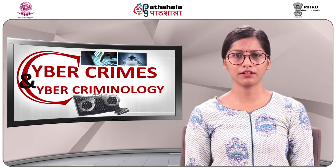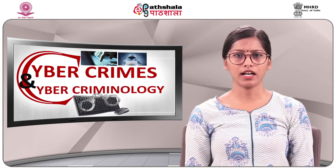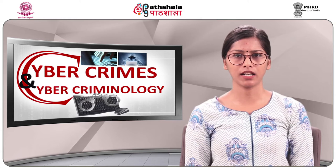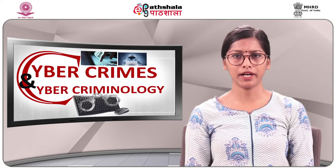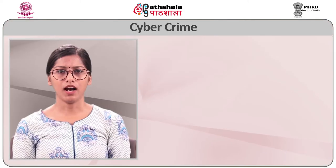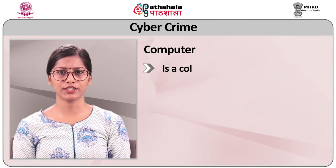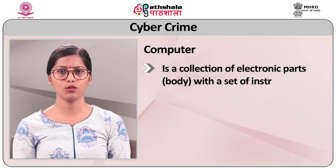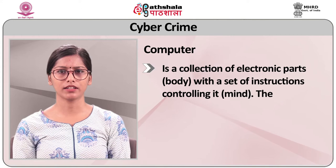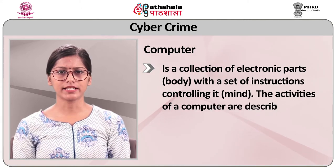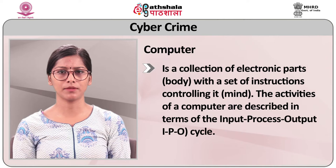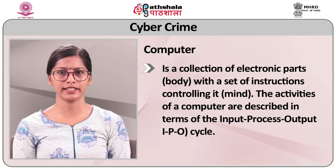Computer hardware is the two-part system consisting of a body — that is the hardware — and a mind — that is the software. A computer is therefore a collection of electronic parts with a set of instructions controlling it. The activities of a computer are described in terms of the input-process-output (IPO) cycle.